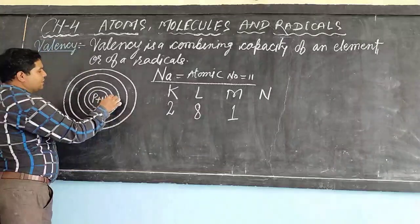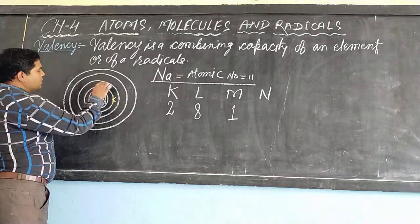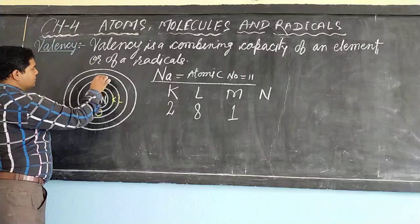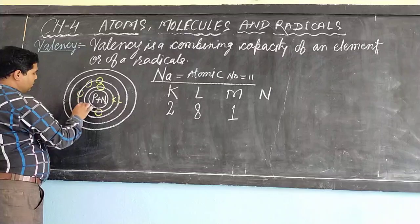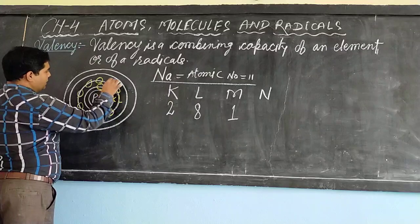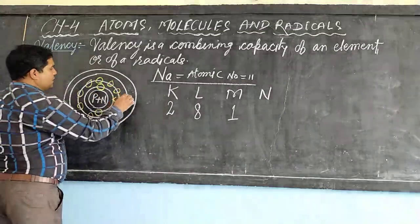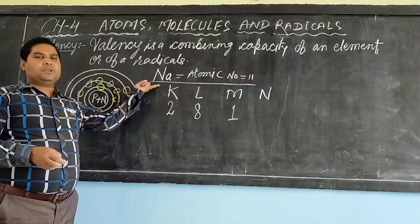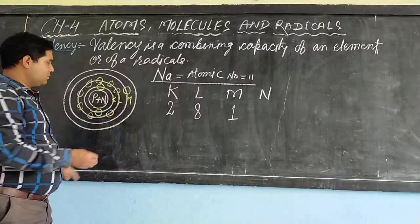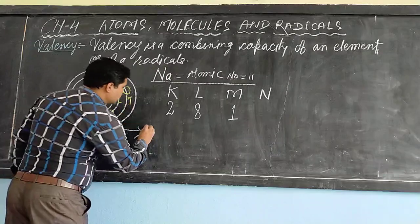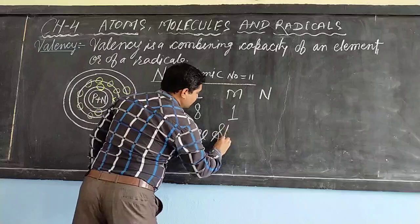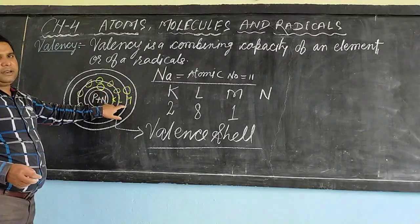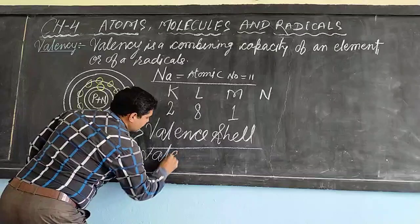In the first K shell, the number of electrons is 2. Next is the L shell, and the capacity is 8 — electrons 1, 2, 3, 4, 5, 6, 7 and 8. And in the M shell, the number of electrons is 1 in the case of sodium. The M shell is known as the valence shell, and the electron present in the M shell is known as the valence electron.